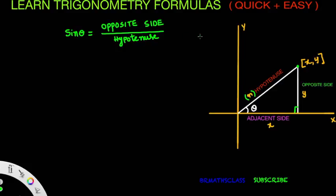Sin theta: what is the definition of sin theta? Sin theta is opposite side divided by hypotenuse. Observe the diagram — opposite side we taken as Y, so sin theta equals Y divided by R.